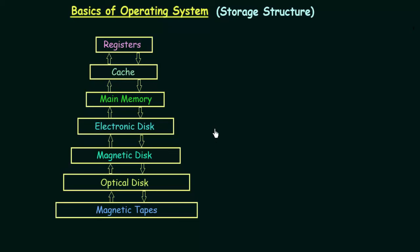Here we have a diagram representing the storage device hierarchy. On the top we have our registers, followed by cache, then we have the main memory, then electronic disk, then magnetic disk, then optical disk, and then magnetic tapes.